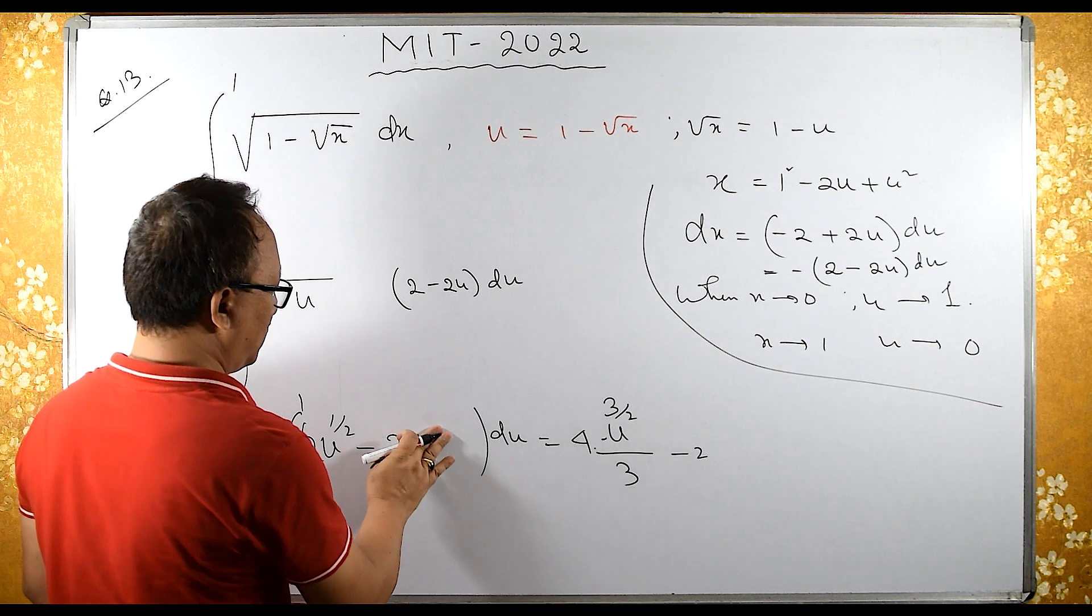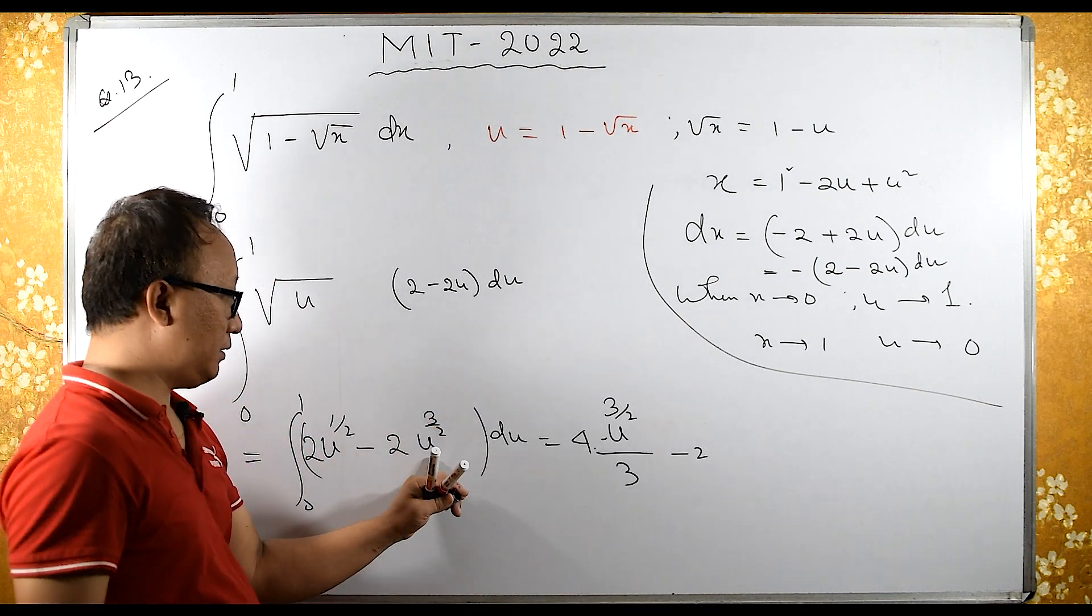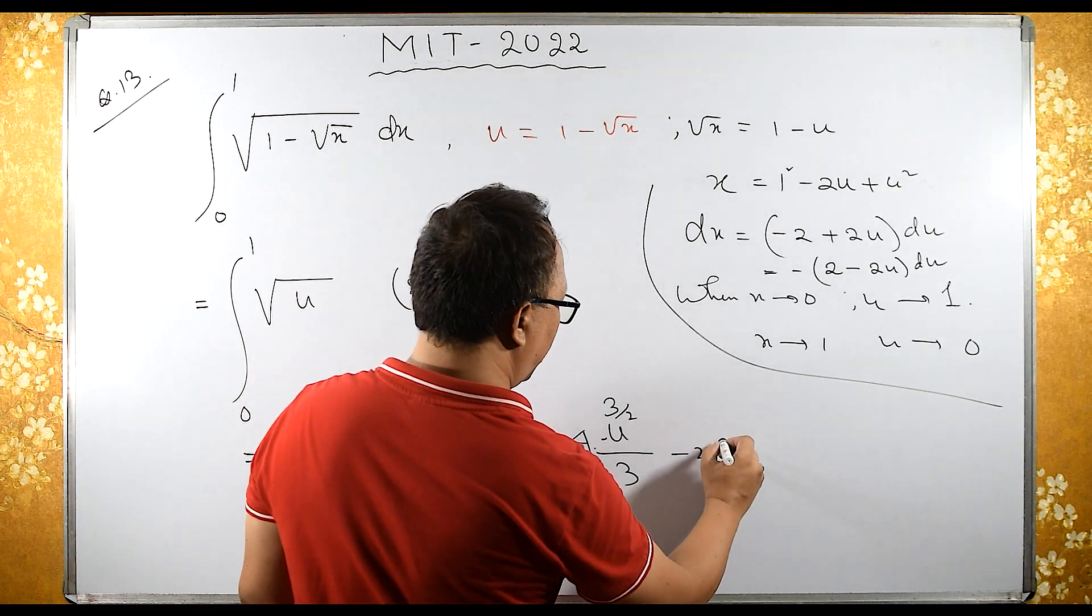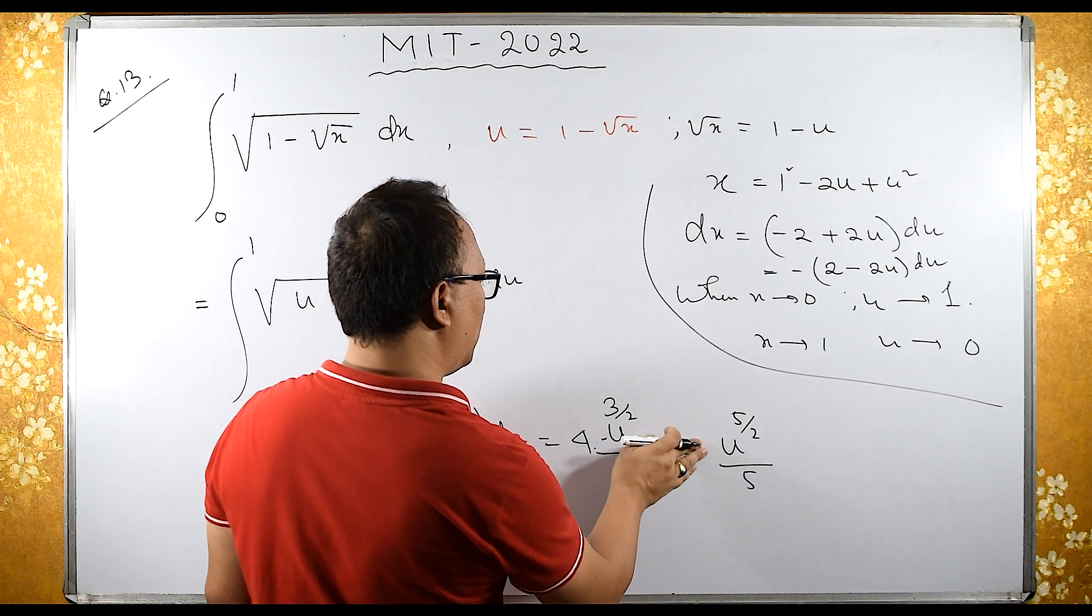Taking 4 common: u^(1/2) plus 1 is 3/2. Integration of u^(3/2) gives u^(5/2) divided by 5/2, evaluated from 0 to 1.